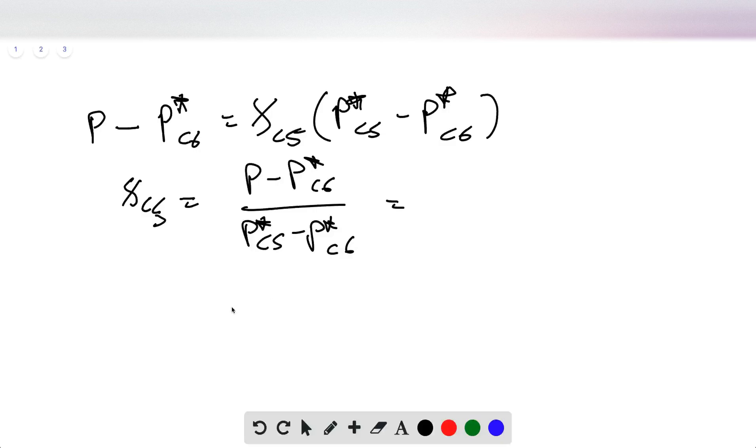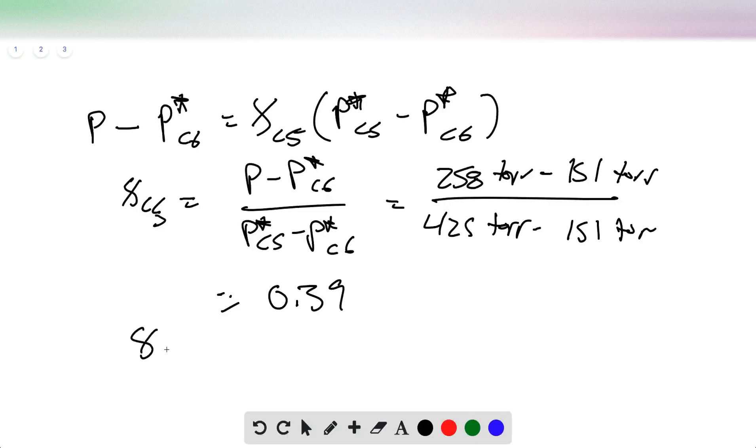And that is going to be 258 torr minus 151 torr over 425 torr minus 151 torr. What that gives us is 0.39. And so the mole fraction of hexane then is just going to be 1 minus 0.39 equals 0.61. And that's all there is to it.